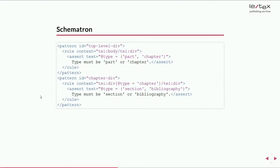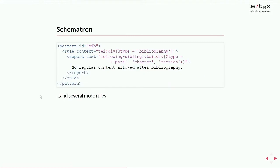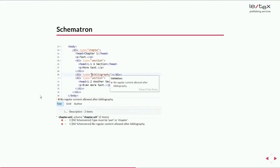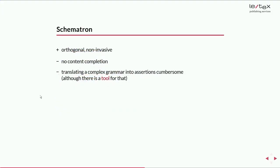Schematron: I scribbled down three of these rules formulated in Schematron and applied this Schematron to a sample document. Of course it works. But it has two drawbacks. Content completion is quite difficult. George Bina explained it to me — it's difficult to analyze the XPath expressions in each Schematron rule to determine which actual values for some attributes would be possible.